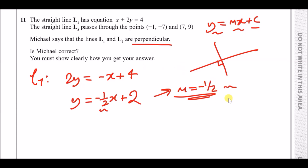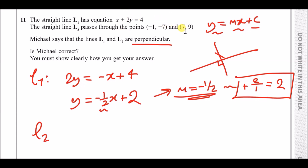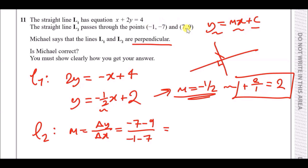For perpendicular lines, the gradients must be negative reciprocals of each other. The reciprocal of −½ is 2, and the negative reciprocal is +2. So L2 must have gradient +2. Using the gradient formula (change in y)/(change in x) for L2's two points: (−7 − 9)/(−1 − 7) = −16/−8 = 2. Gradient is +2, confirming the lines are perpendicular. Michael is correct.